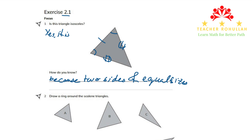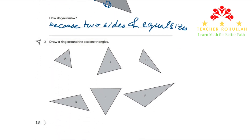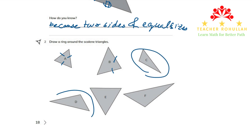Let's move to question number two. It says draw a ring around scalene triangles. We have some triangles labeled from A to E. Triangle A is an equilateral triangle because all the sides are equal. Triangle B is an isosceles triangle because this side and this side are of equal sizes. The scalene triangles are C, D, and F. And triangle E is also isosceles because these two sides are equal.